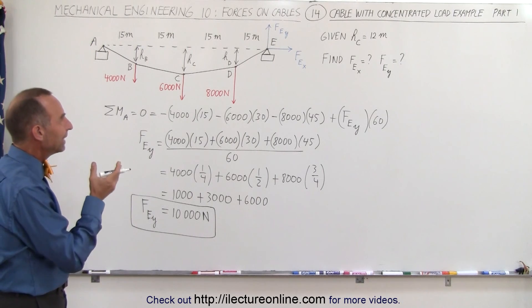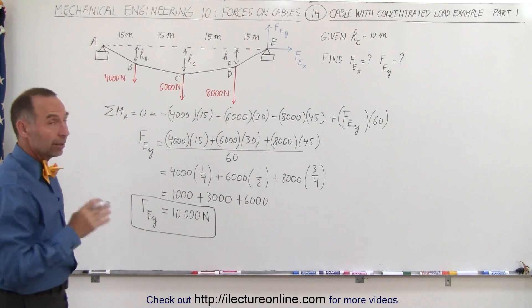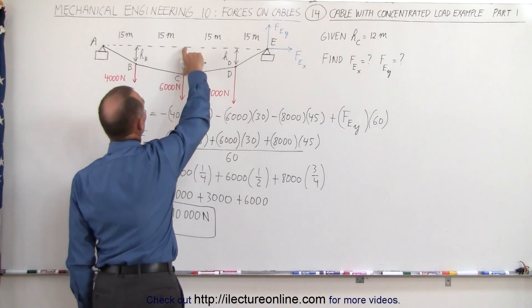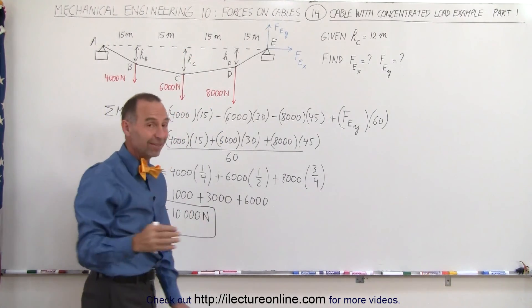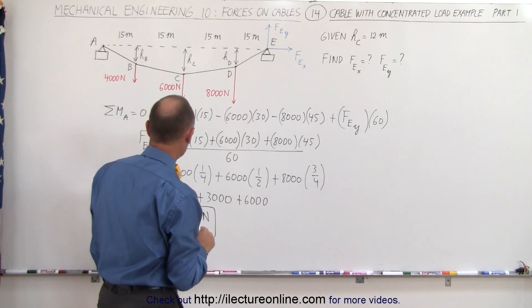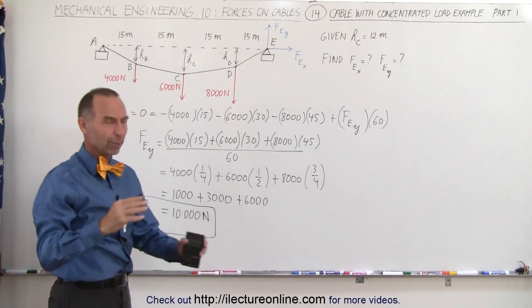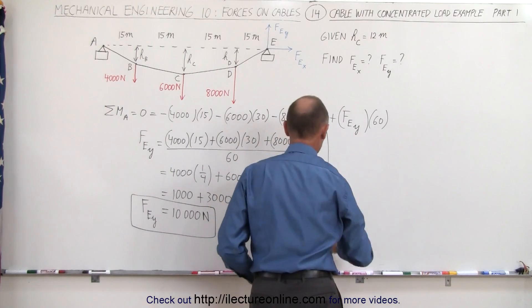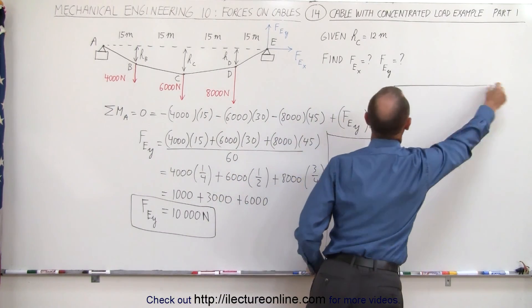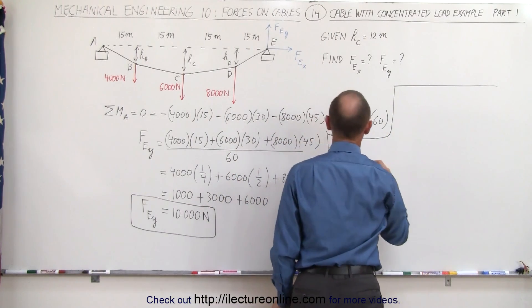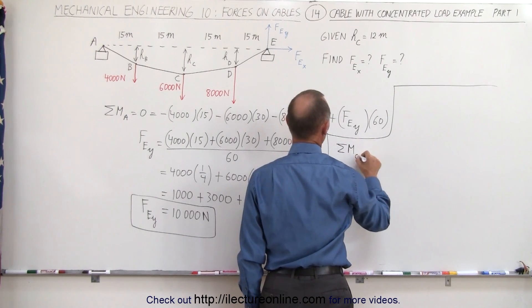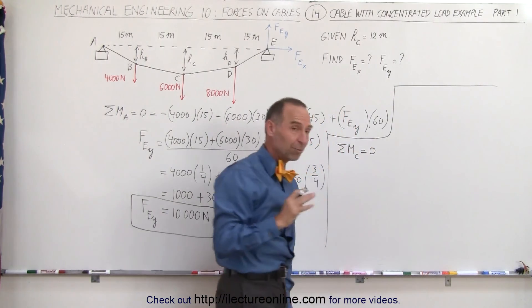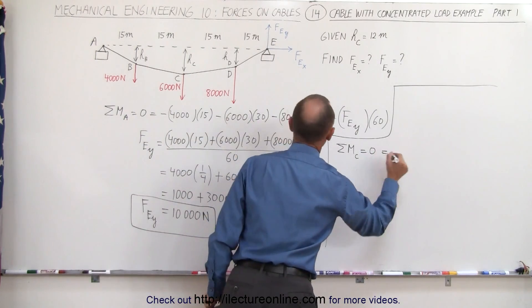All right, so this is the force at E in the y direction. Now we need to find the force in the x direction. Luckily, we're given this distance right here, which means we can take the sum of the moments about point C and see what happens. So what we're going to do is calculate the sum of the moments about point C. Of course, that has to be equal to zero.